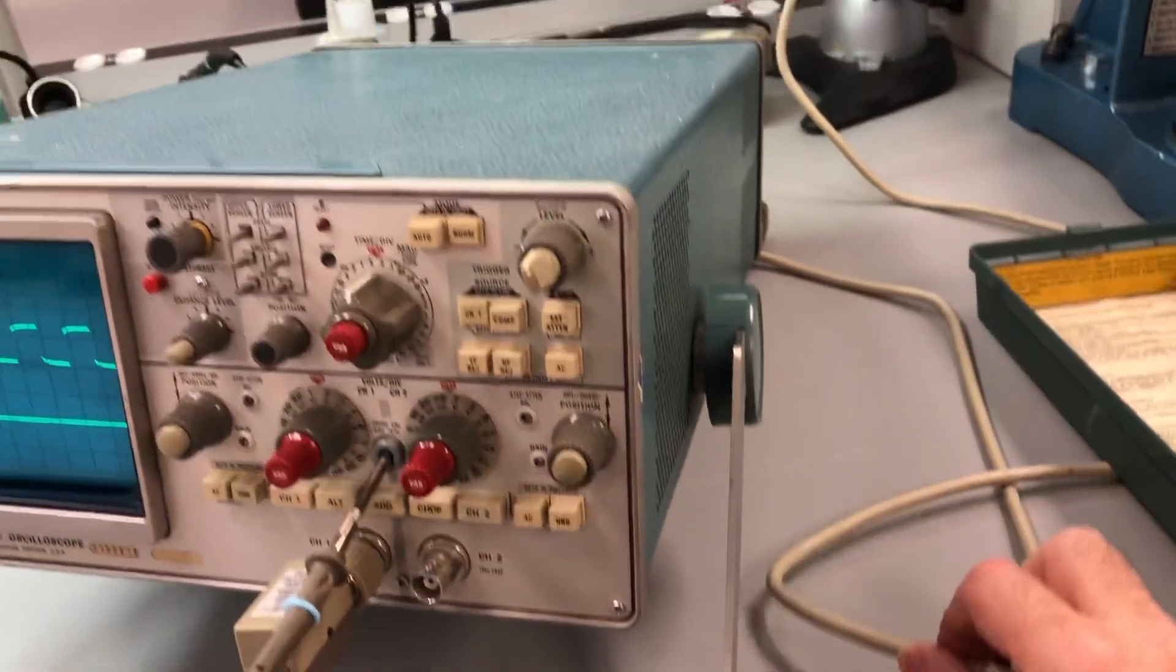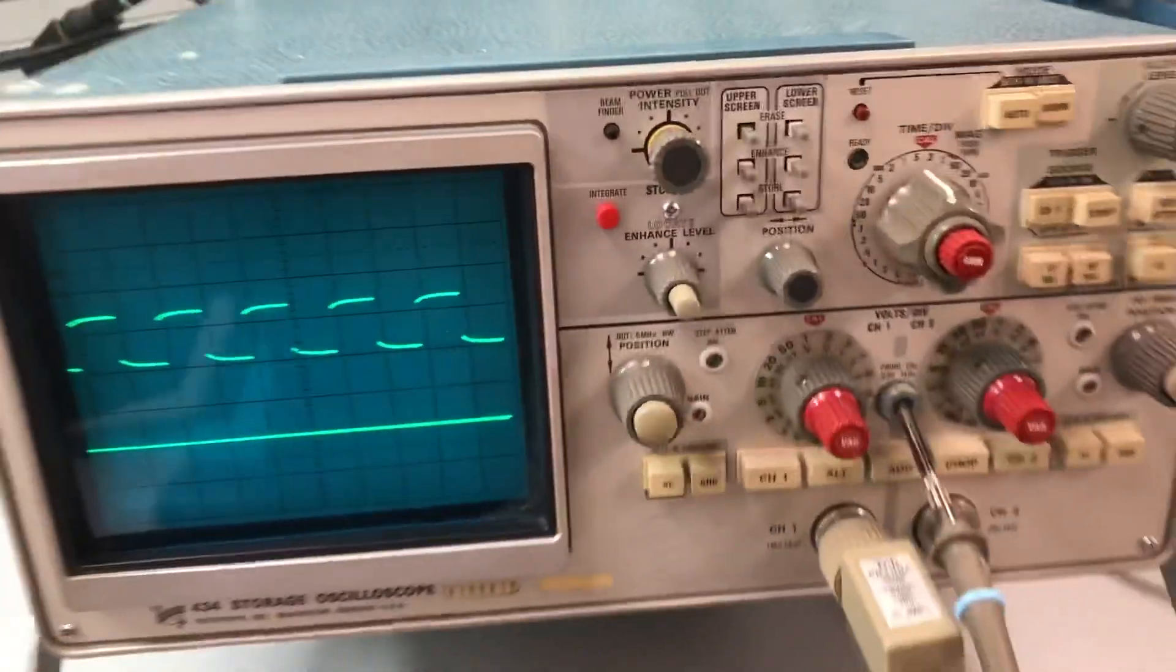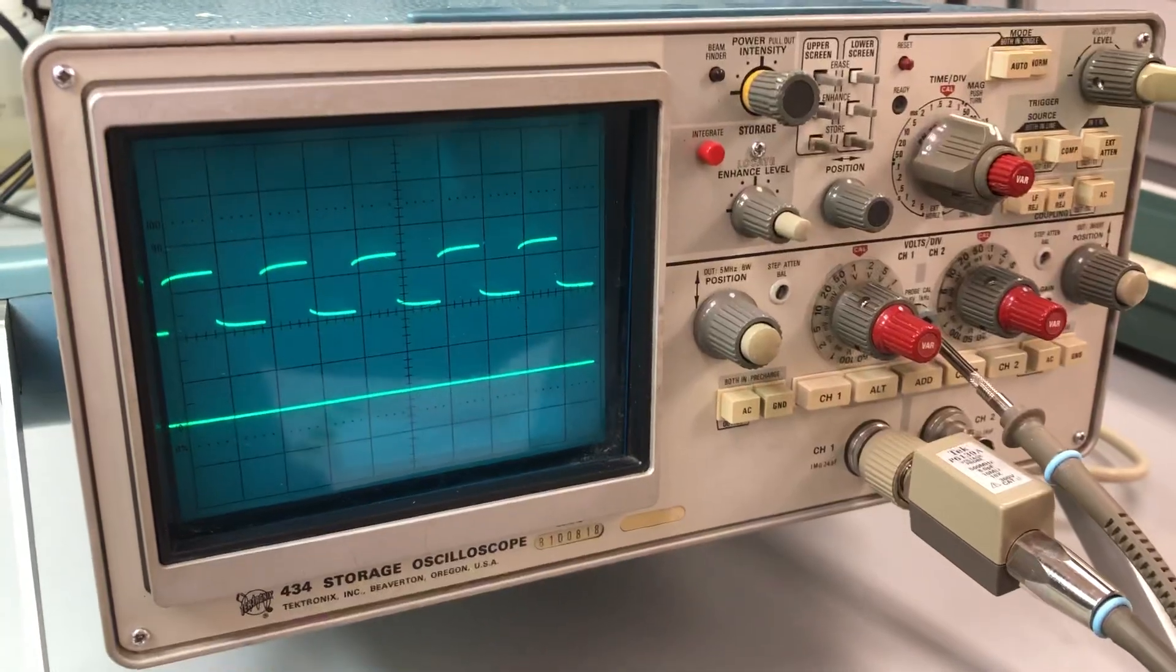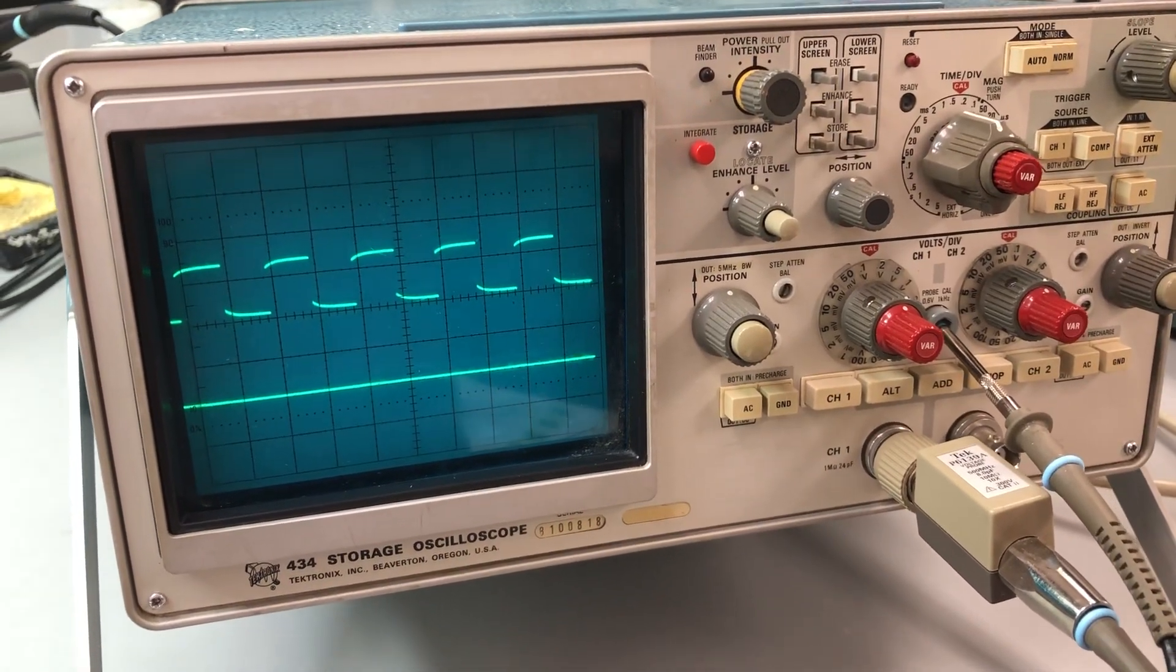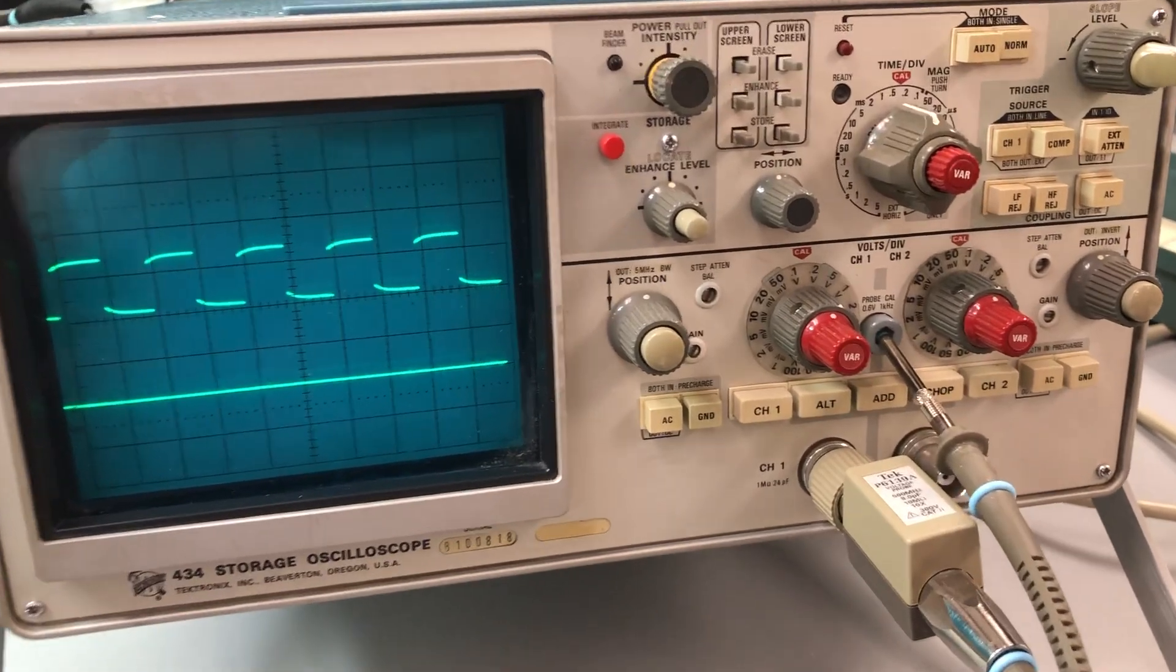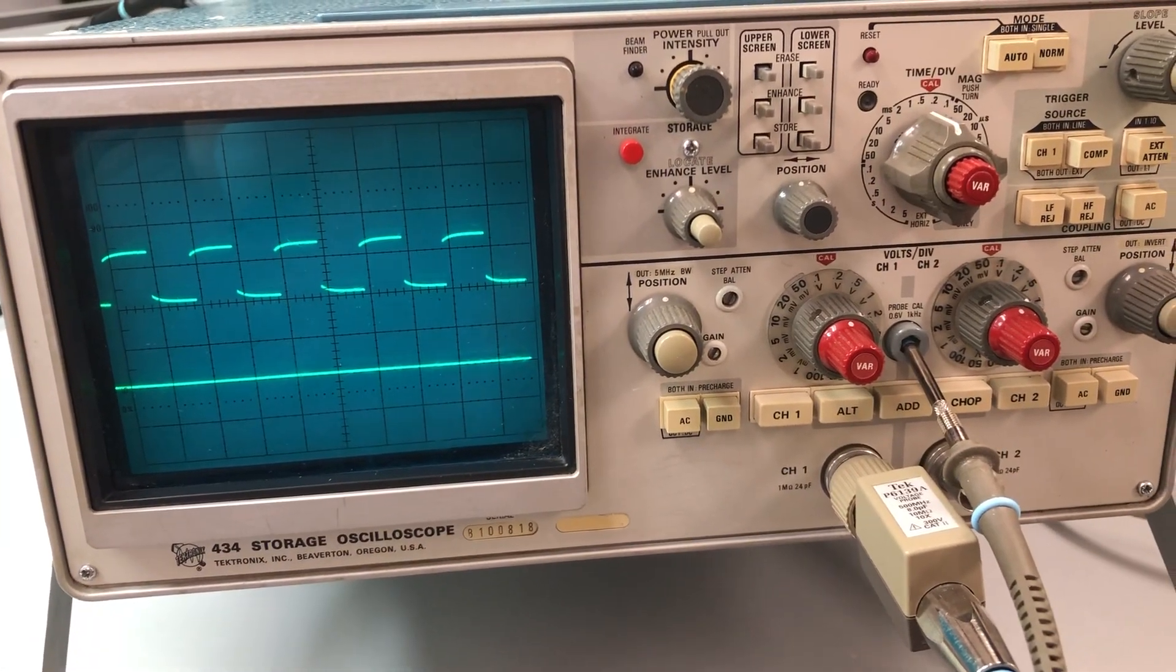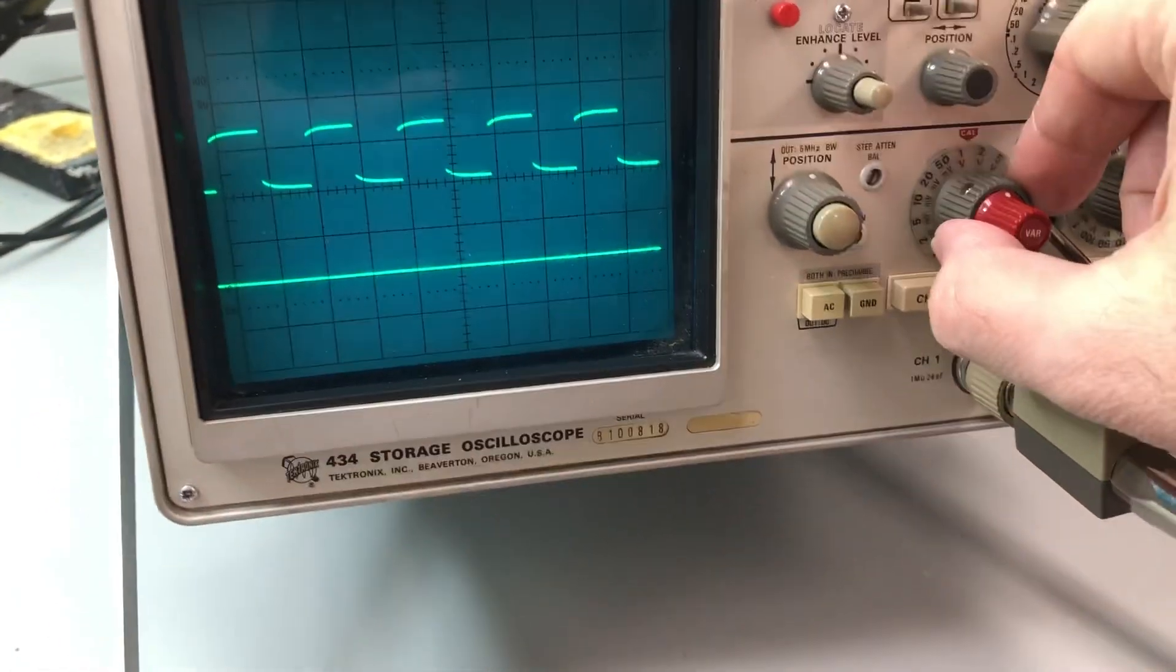The power cord is integrated right into the chassis. I'm worried about losing it since it's hardwired in. Right now I have the calibrator signal going into channel 1 and nothing going into channel 2. The calibrator signal is 600 millivolts at 1 kilohertz. That's what we're looking at right now.